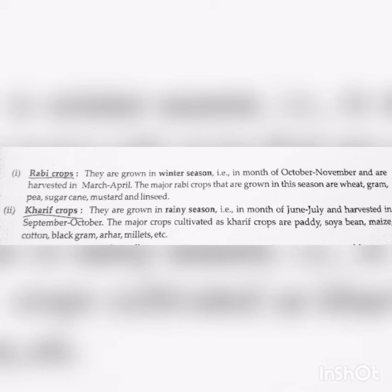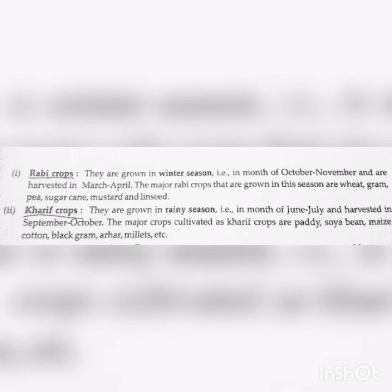Rabi crops are grown in winter season, that is in the months of October to November, and are harvested in March to April. The major Rabi crops grown in winter season are wheat, gram, pea, sugarcane, mustard and linseed. Kharif crops are grown in the rainy season, that is in the months of June to July, and harvested in September to October. The major crops cultivated as Kharif crops are paddy, soybean, maize, cotton, black gram, arhar, millets, etc.